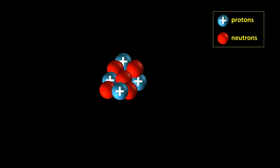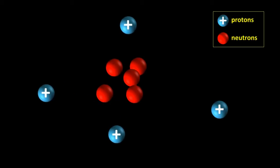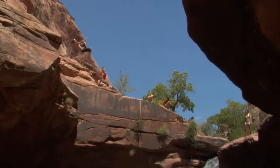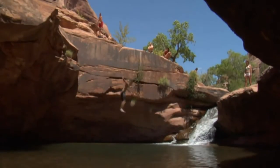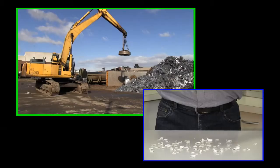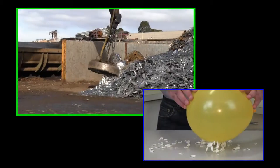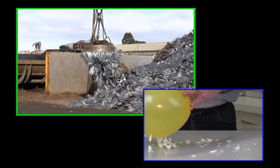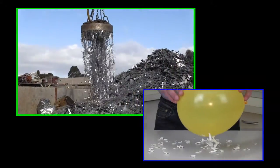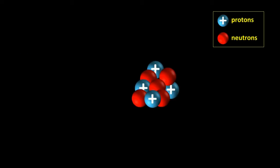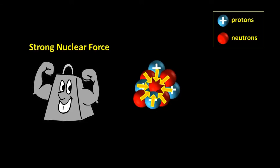So why don't the protons in the nucleus, which are all positively charged, repel each other and fly apart? Well, while most of us are familiar with the force of gravity and with the forces associated with magnets and electrostatic charges, there is another force of nature with the somewhat unusual name of the strong nuclear force. This force acts between protons and neutrons in the nucleus and keeps them bound within the nucleus. We don't really see it in everyday life, but without it, there wouldn't be any atoms.